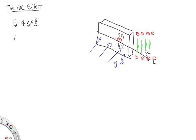So we have that F_B is equal to F_e. The magnetic force is given by QV_d B, and the electric force is given by QE_H for the Hall electric field. So these Q's will cancel out, and this will give us our Hall electric field.